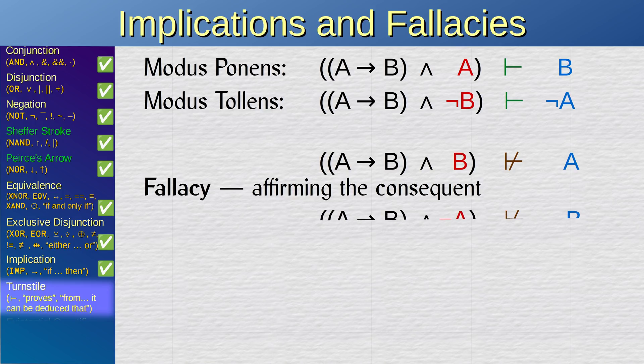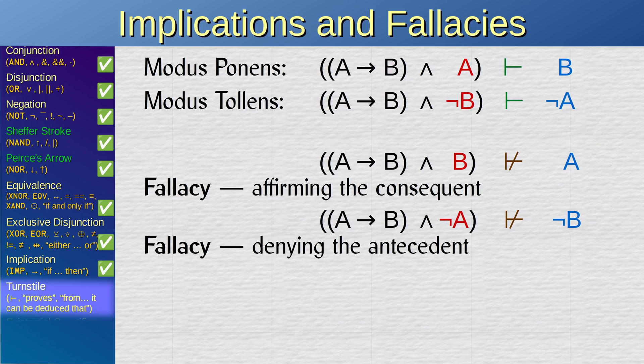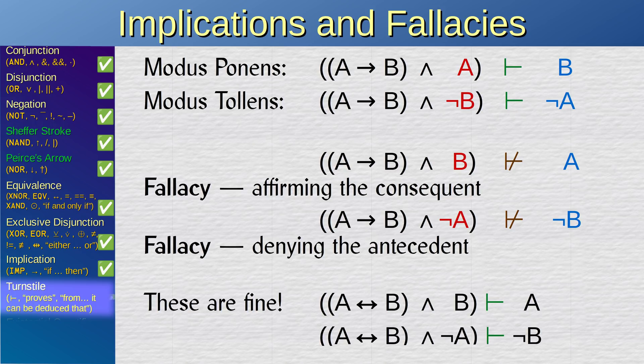Likewise, if A implies B and A is false, and you conclude that B must be false, then you are invoking the fallacy of the inverse, also called denying the antecedent. A implies B does not lead to the deduction that not-A implies not-B — that would be equivalence. We previously discussed equivalence, but implication is not equivalence.